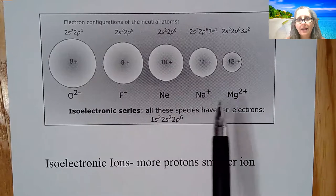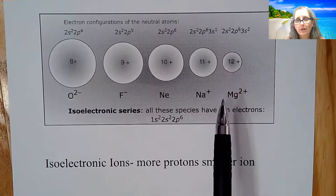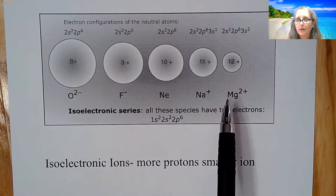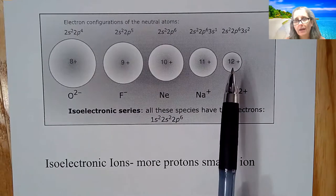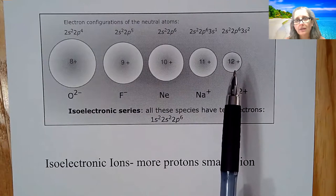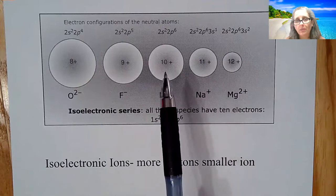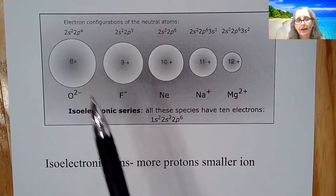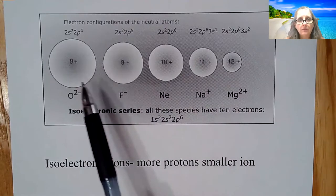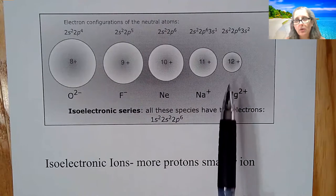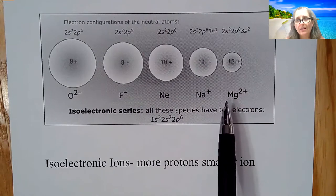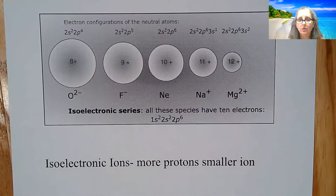So what tends to happen because you have 12 protons here and only 10 electrons with magnesium ion, you have a smaller size compared to sodium ion, compared to neon fluoride and oxide. So again, the more protons you have, the smaller the isoelectronic ion is going to be.